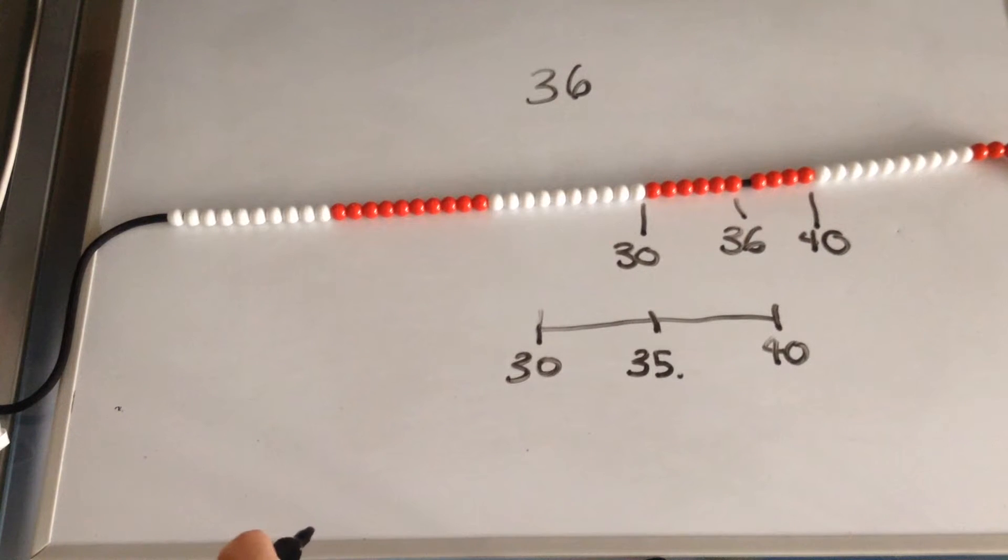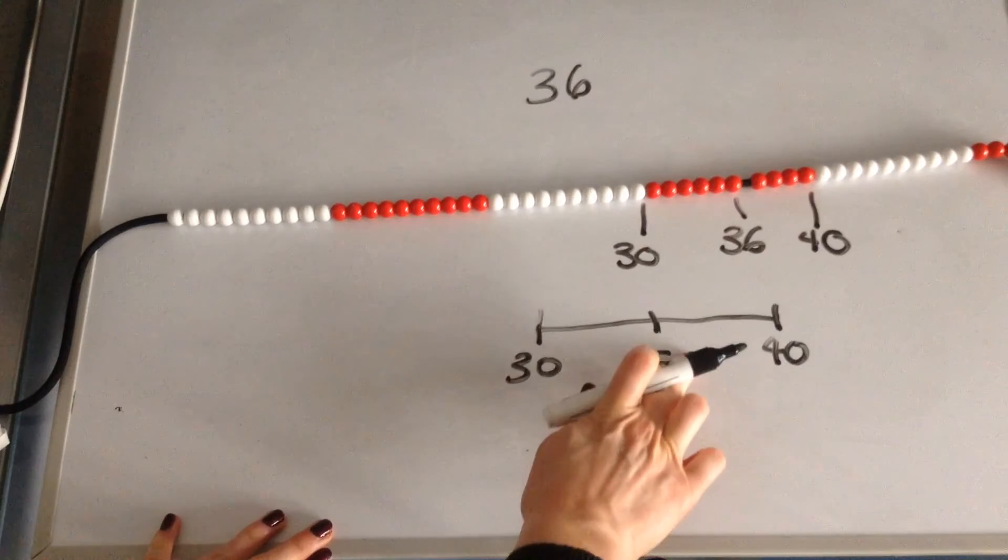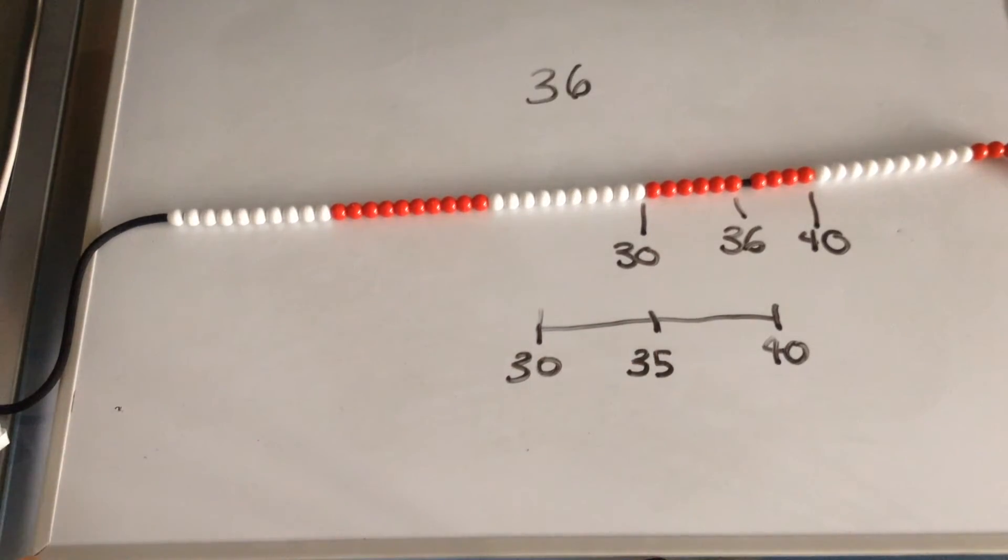Whereas 34.99999 is always going to be smaller than our 35. So that's why 5 is an important number for rounding.